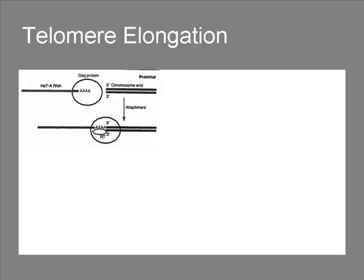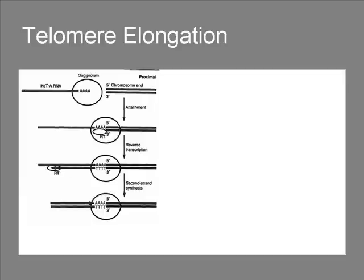It joins to the telomeric DNA with its oligo-A in centromere-proximal orientation. No specific sequences are required at the targeted end. Reverse transcriptase copies the RNA into DNA. Second strand synthesis is done by cellular DNA repair enzymes. The new DNA is ligated, and the element has successfully elongated the telomere.